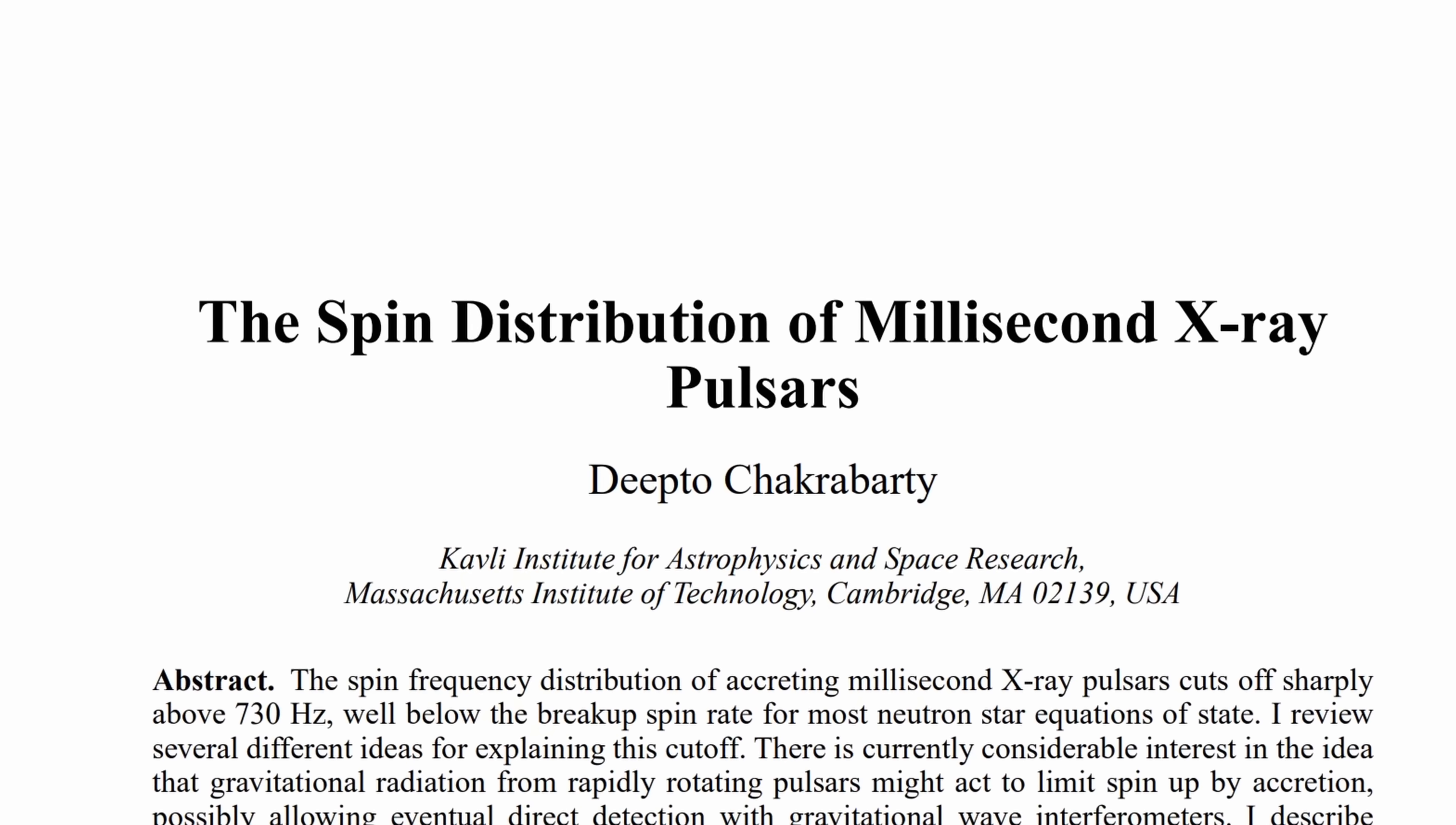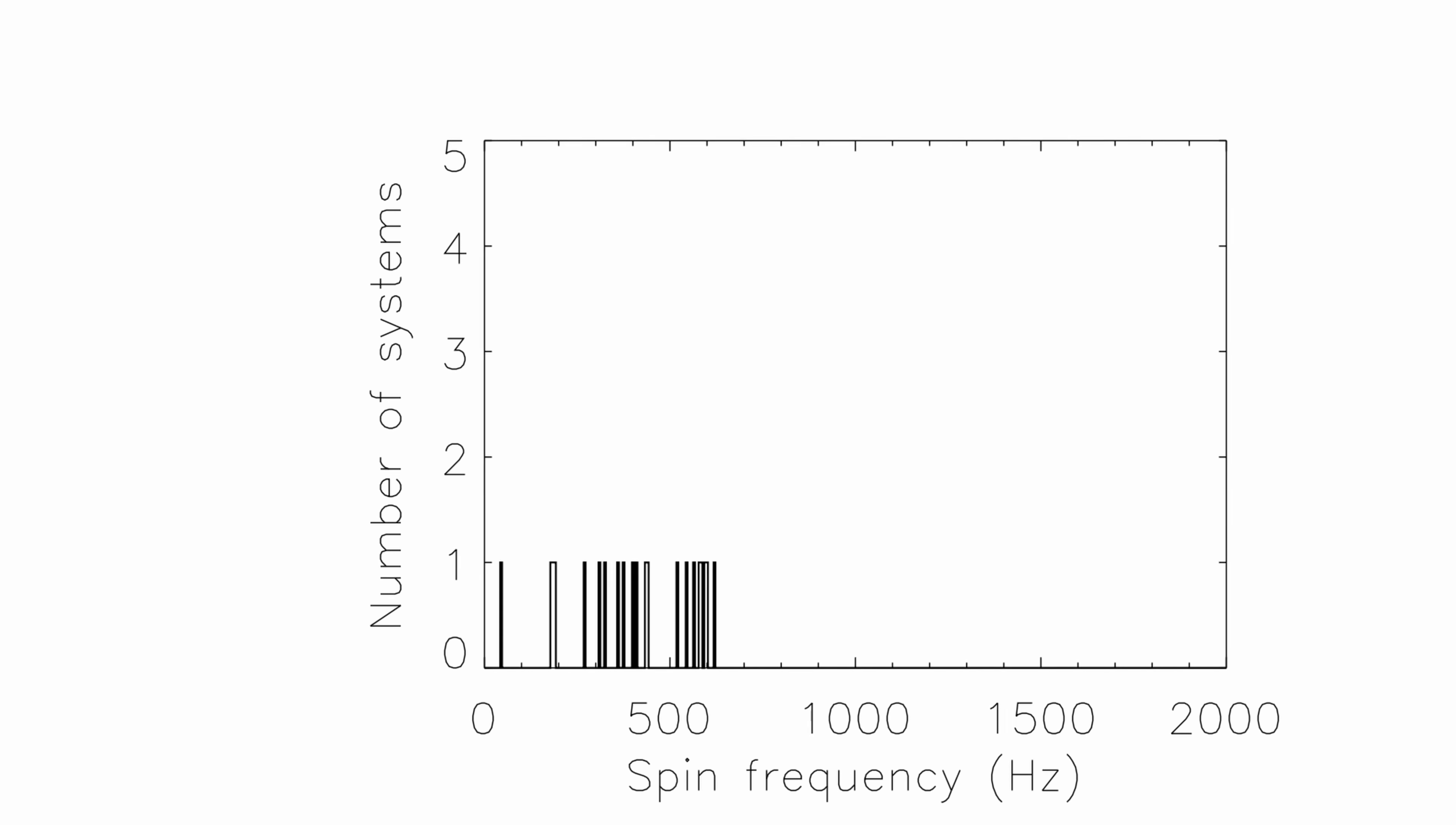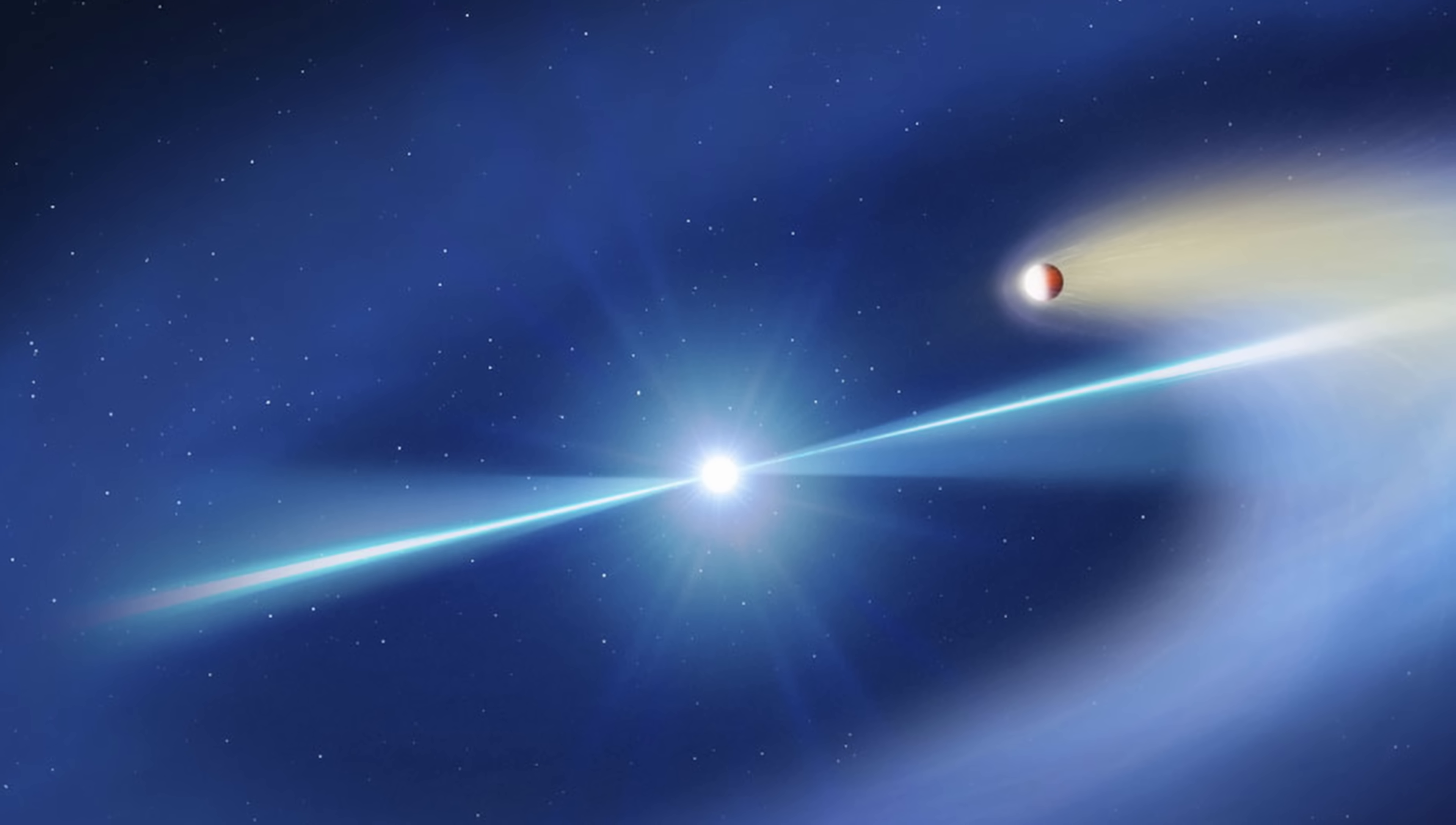There was actually a paper a while back that tried to create a kind of a distribution for the frequency of the spin, in essence discovering that at approximately 730 Hertz there seems to be some kind of an official limit. In other words, we haven't really found anything above 730, with the fastest spinning objects clustering around the same frequency.